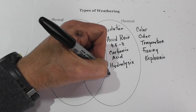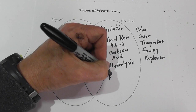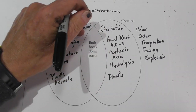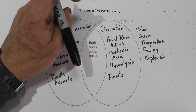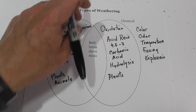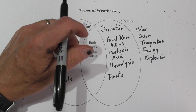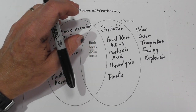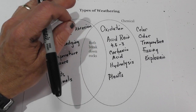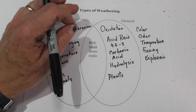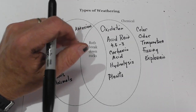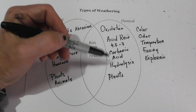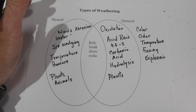And then some plants — technically lichen is not a plant, but lichen is a combination of fungi and algae. It releases a slight acid on the rock, and that breaks it down. So those are some examples of chemical weathering.